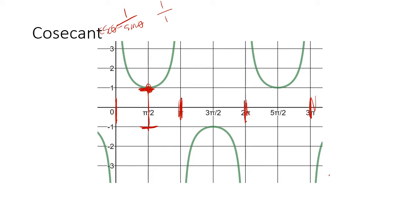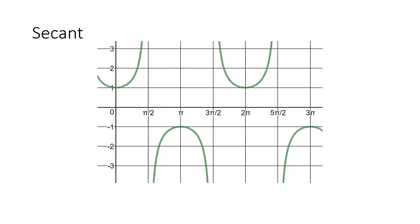The period of cosecant — when it starts repeating itself — look, we have this point right here, and the next time that point happens is right there. So the difference between 5 pi over 2 and pi over 2 is 4 pi over 2, or just 2 pi. Secant is basically the same thing, except we're dealing with the reciprocal of cosine. Whenever cosine is 1, secant can be 1, but it can never be less than that — it has to always be greater than or equal to 1 or less than or equal to negative 1. The domain of secant does not include the odd multiples of pi over 2: pi over 2, 3 pi over 2, 5 pi over 2, 7 pi over 2, etc. It also repeats every 2 pi.